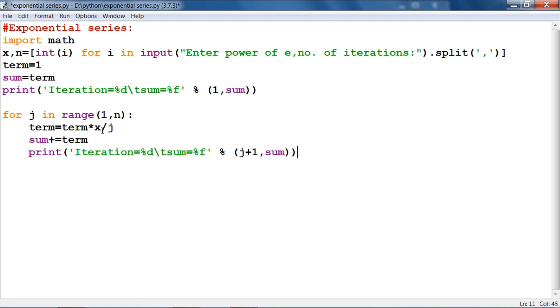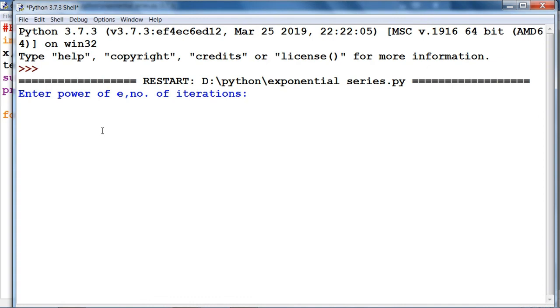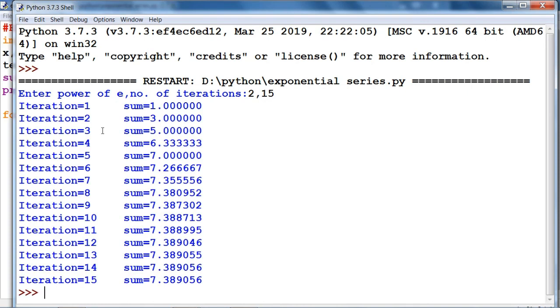So that is all. Now we have to run this program, let's press F5. Enter power of e, here I want to see e squared, and then comma, the number of iterations. Let's say I want to see the 15 iterations.